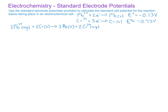In this problem, we're asked to use the standard electrode potentials provided to calculate the standard cell potential for the reaction shown. In this reaction, we have 3 moles of lead 2+ ions reacting with 2 moles of chromium metal to produce 3 moles of solid lead and 2 moles of chromium 3+ ions. The first thing we'll want to do is look at the overall reaction and identify what's being oxidized and what's being reduced.